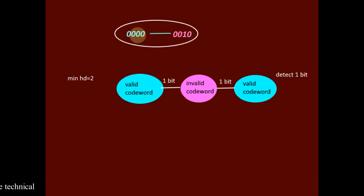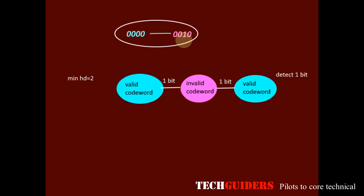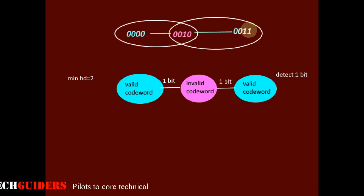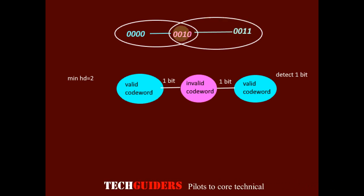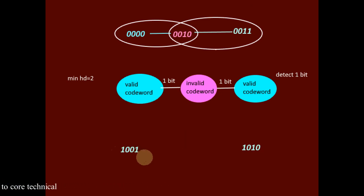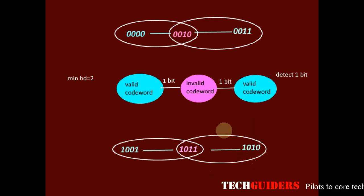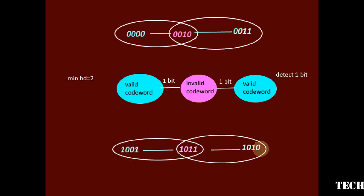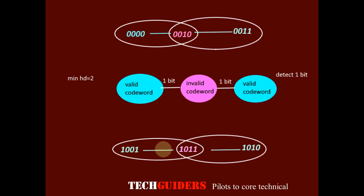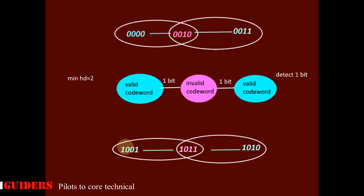For example, suppose we have a valid codeword. A 1-bit error at bit position 3 has created an invalid codeword. Now consider another valid codeword whose Hamming distance from this valid codeword is 2. A 1-bit error at bit position 4 on this valid codeword may also generate the same invalid codeword. For this one the bit error was at position 3, and for this one the bit error was at position 4. So we will not be able to determine what the actual valid codeword was before the error.